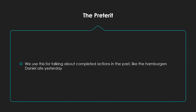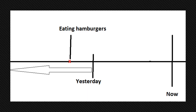The preterite is usually contrasted with the imperfect. We use it for talking about completed actions in the past, like the hamburgers that Daniel ate yesterday. On a verb timeline for that sentence, 'yesterday' is a single point — this happened only once. That's when we know this should be the preterite and not the imperfect.